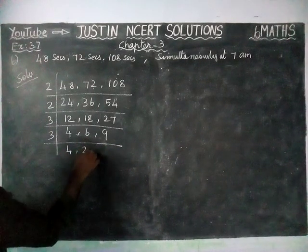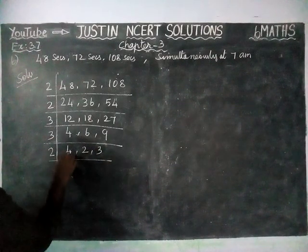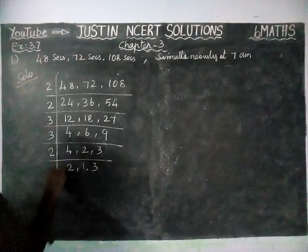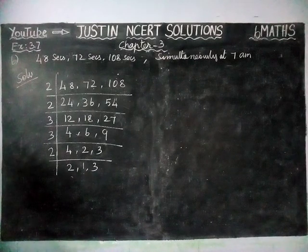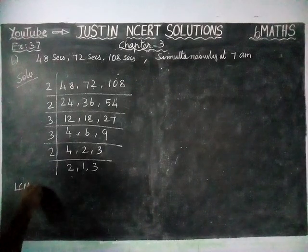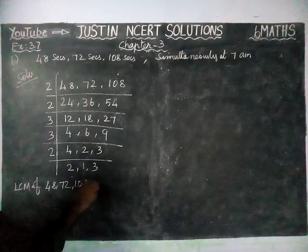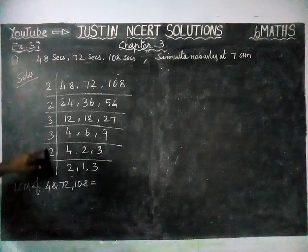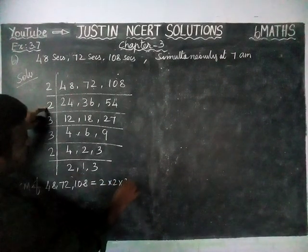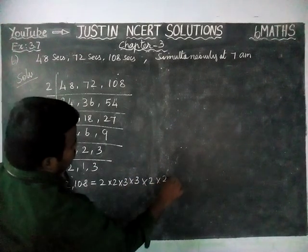4 threes are 12, 6 threes are 18, 3 threes are 9. Now again we divide by 2: 2 twos are 4, 1 two is 2, 3 stays as it is. Now we cannot divide by any common number. 2 and 3 are prime numbers so we stop here. The LCM of 48, 72, and 108 is equal to we multiply all the common divisors: 2 × 2 × 3 × 3 × 2 × 2 × 3.